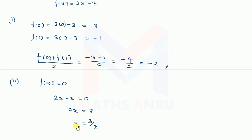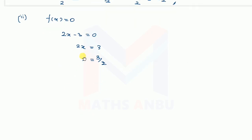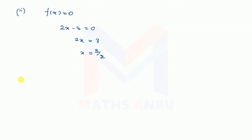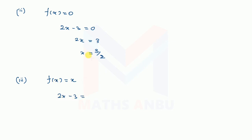Next is the third sum. Find x such that f of x is equal to x. So f of x is equal to x, meaning 2x minus 3 is equal to x.